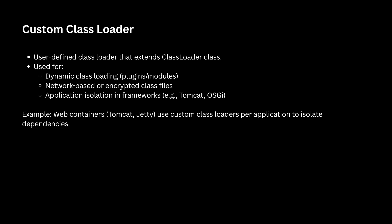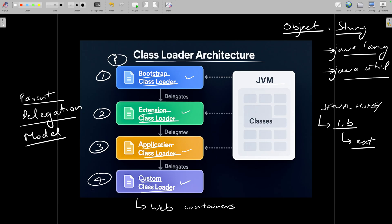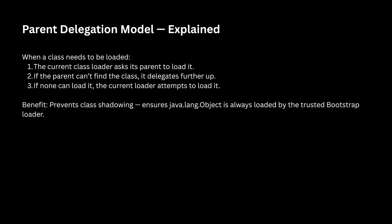The Custom Class Loader is a user-defined class loader that extends the ClassLoader class. You can use it for dynamic class loading, for network-based or encrypted class files, or for application isolation in frameworks. For example, web containers like Tomcat or Jetty use custom class loaders per application to isolate dependencies. This is optional and depends on your requirement.